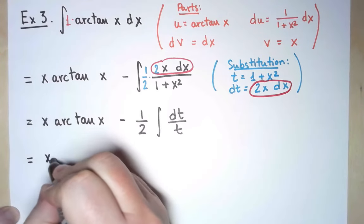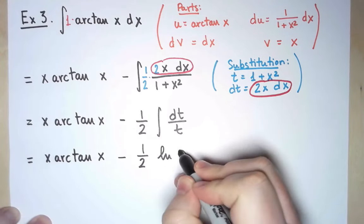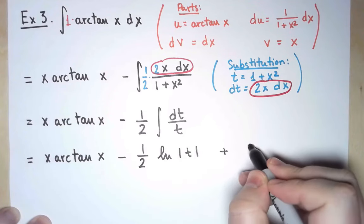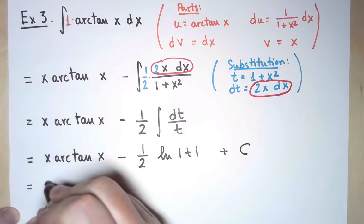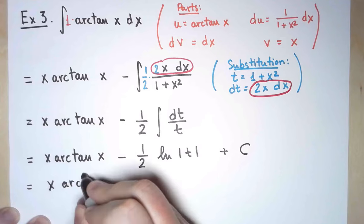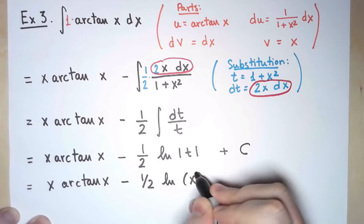An antiderivative of 1 over t is ln absolute value of t. Don't forget the integration constant. And now I simply have to undo the substitution, t equals 1 plus x squared.